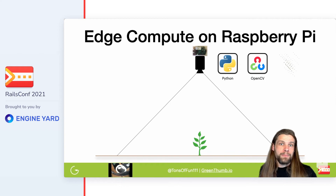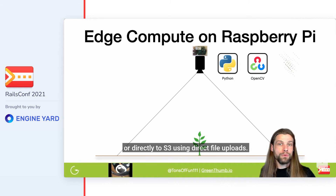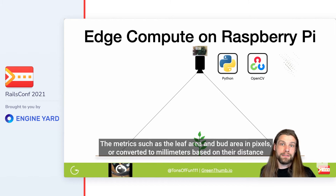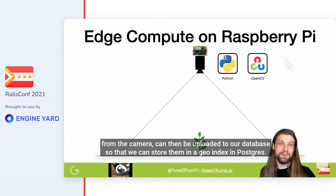In this case, the pre- and post-processed images can be uploaded to the Rails app or directly to S3 using direct file uploads. The metrics such as leaf area and bud area in pixels — or converted to millimeters based on their distance from the camera — can then be uploaded to our database and stored in a geo-index in Postgres.